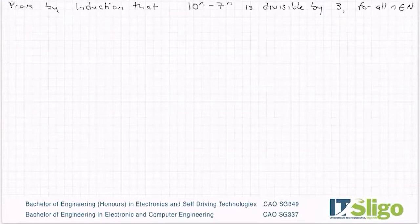Prove by induction that 10 to the power of n minus 7 to the power of n is divisible by 3 for all n as an element of n.